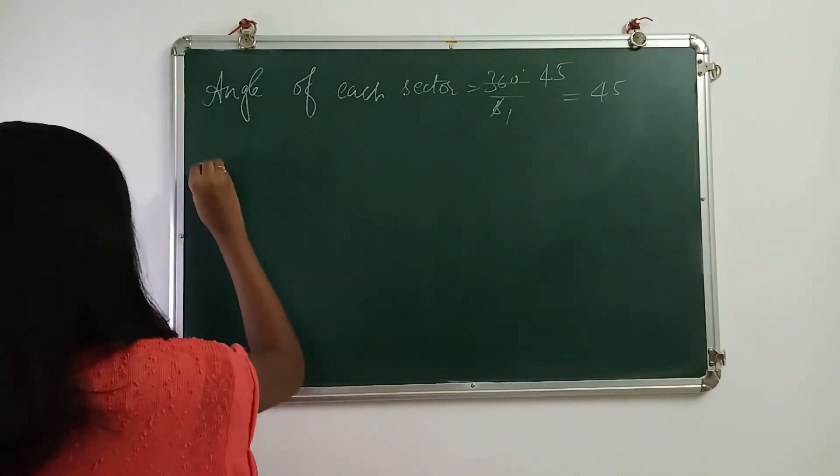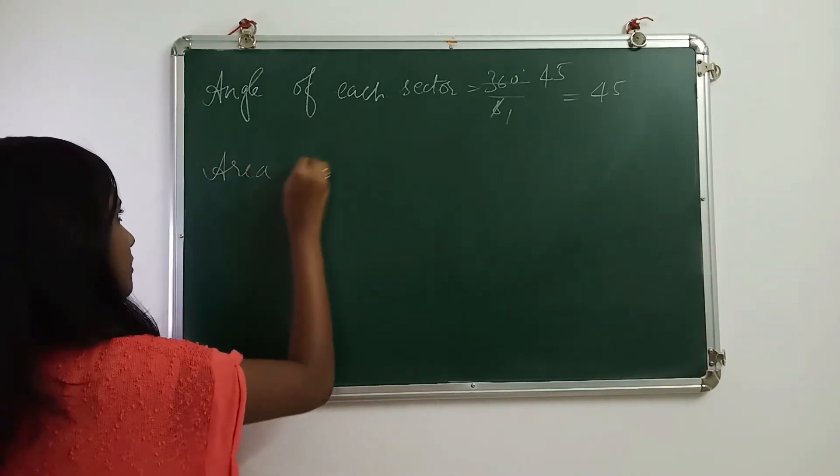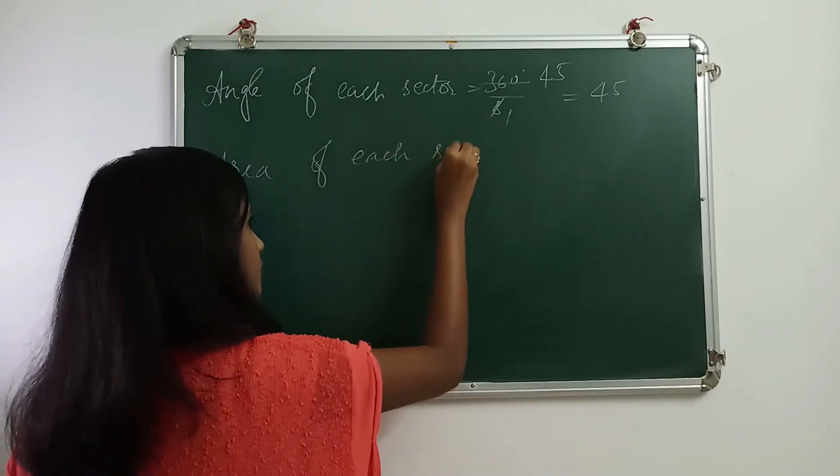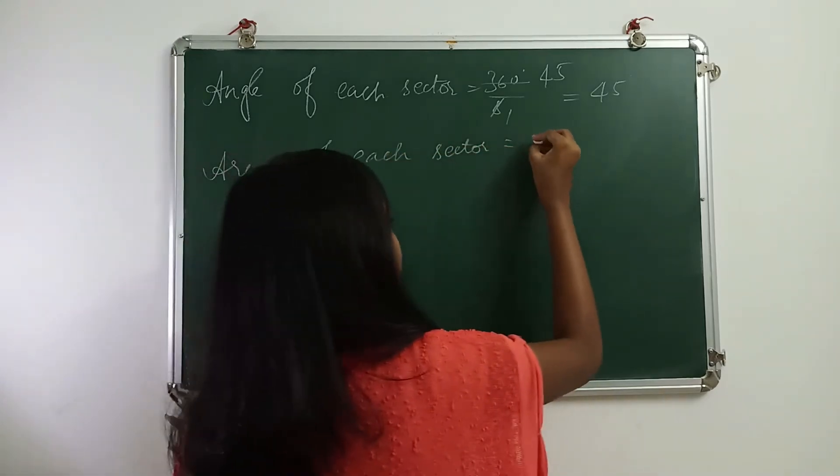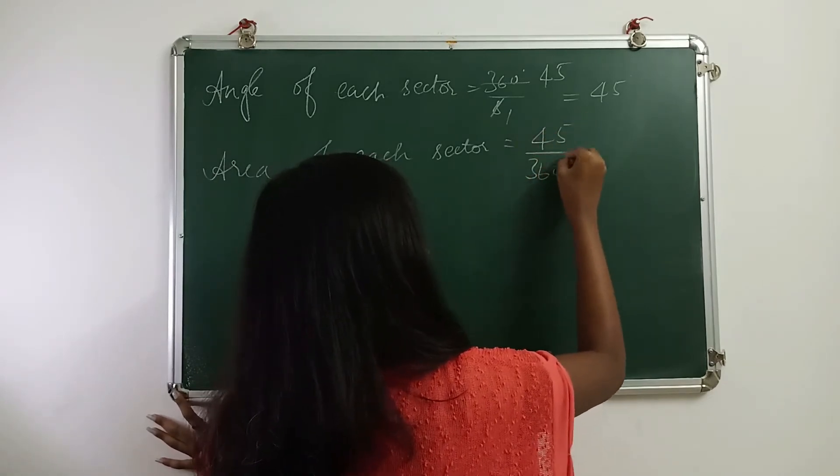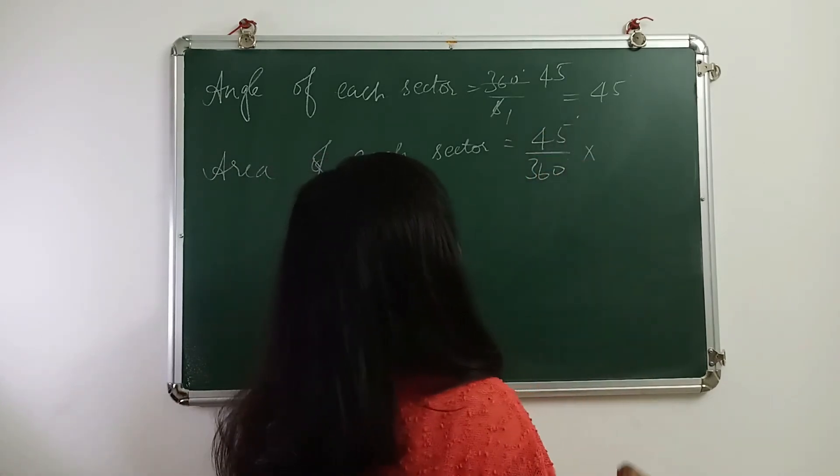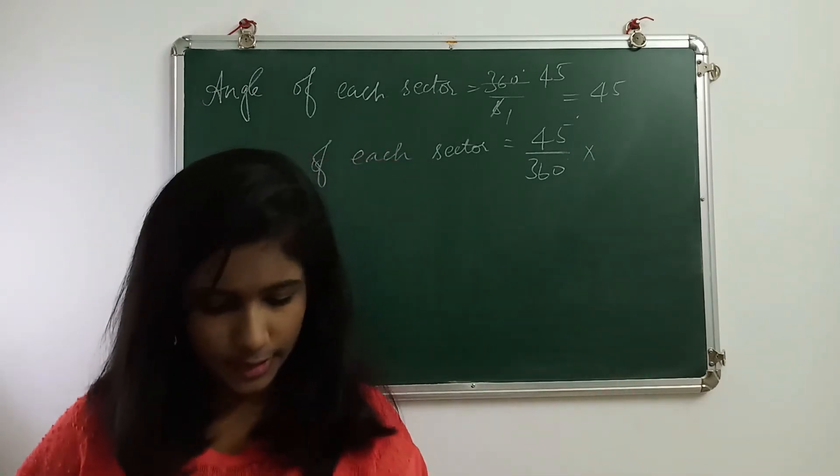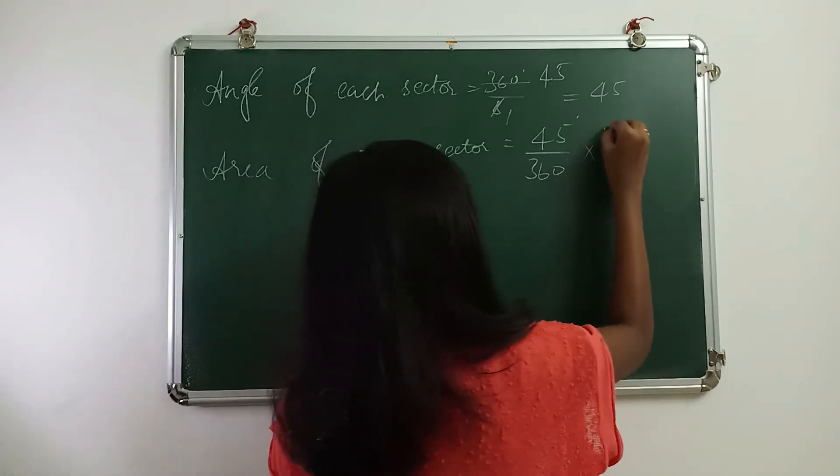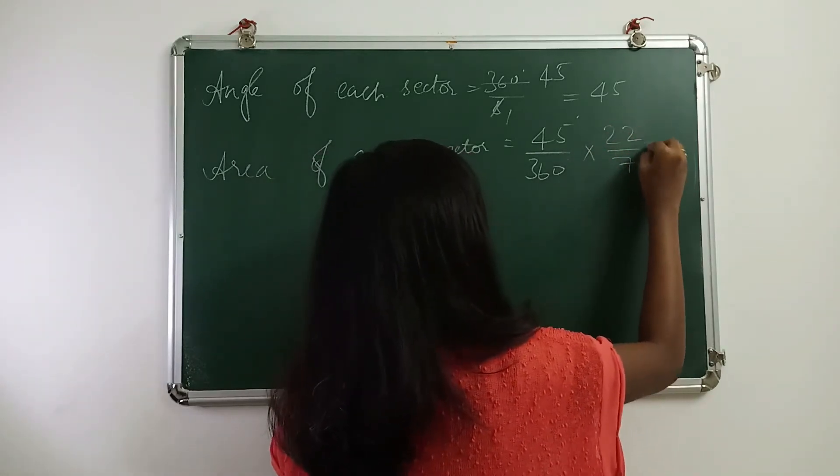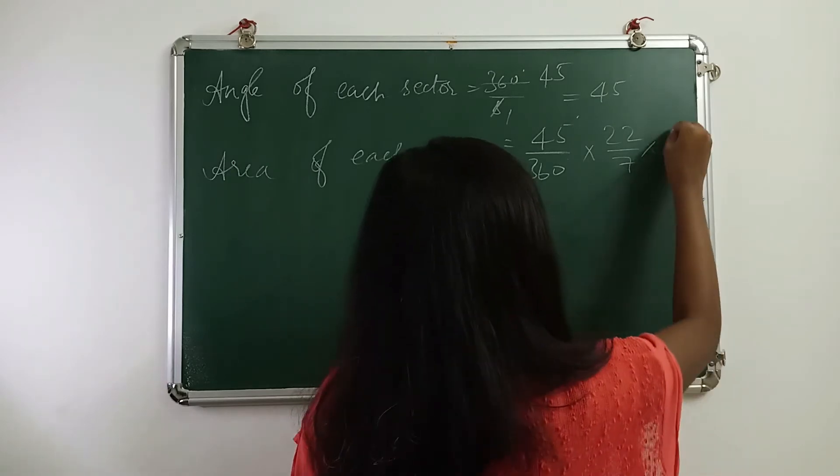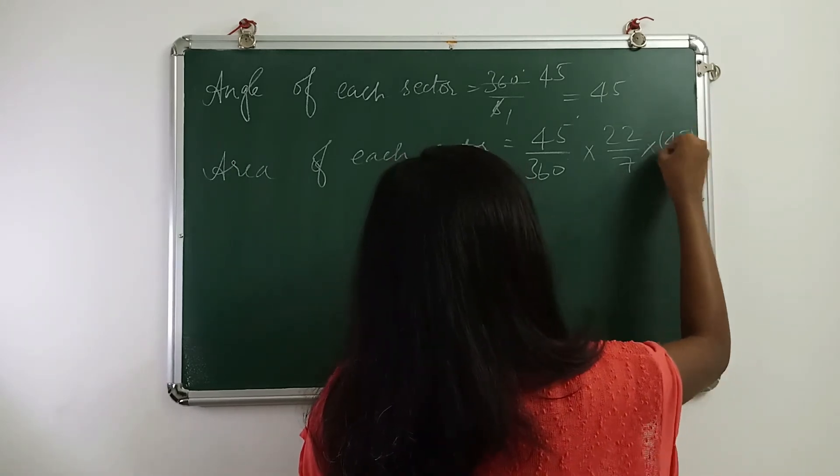Now, coming to area of each sector, we have theta to be 45 degrees, so 45 by 360 into pi r square. We can take 22 over 7 into r, r is 45, so 45 square.